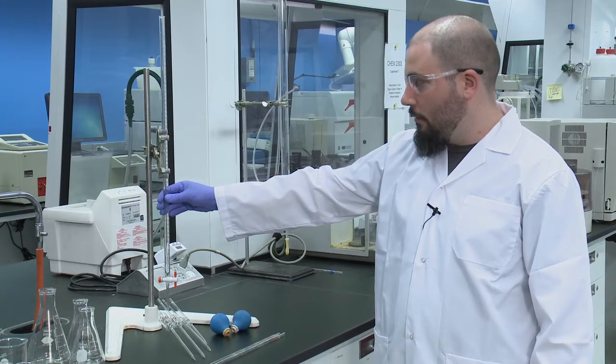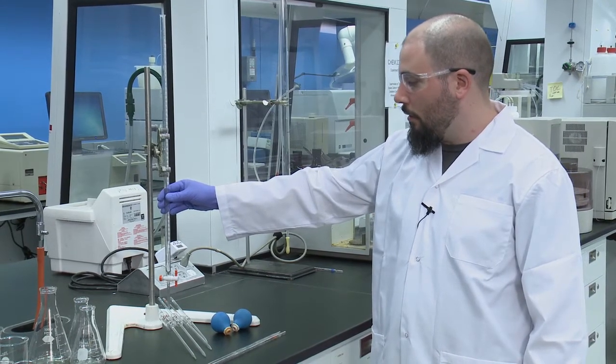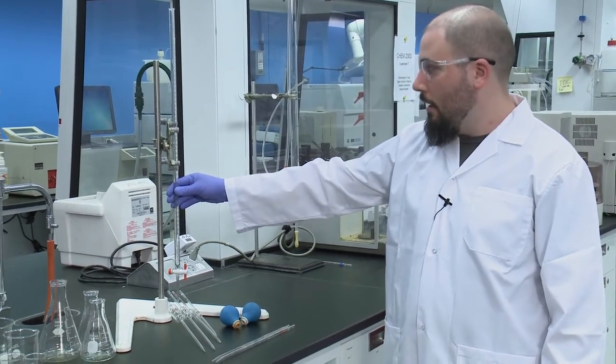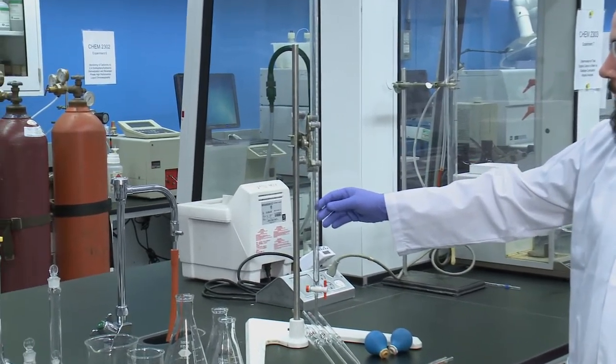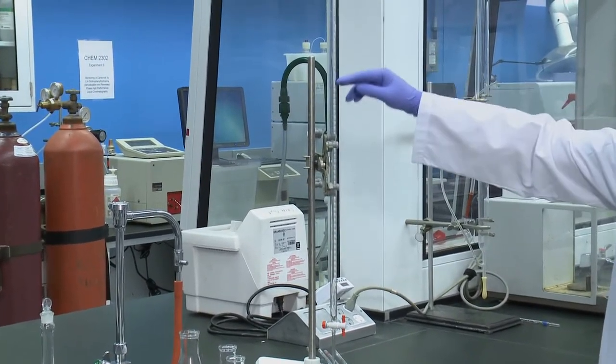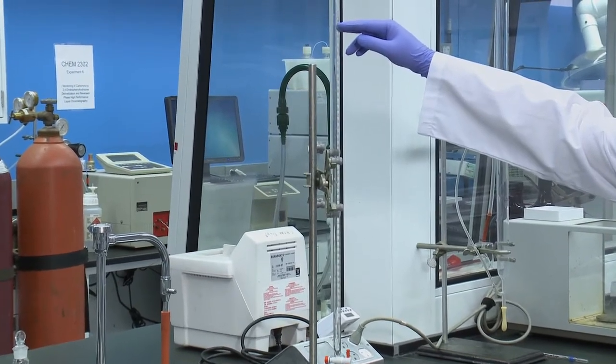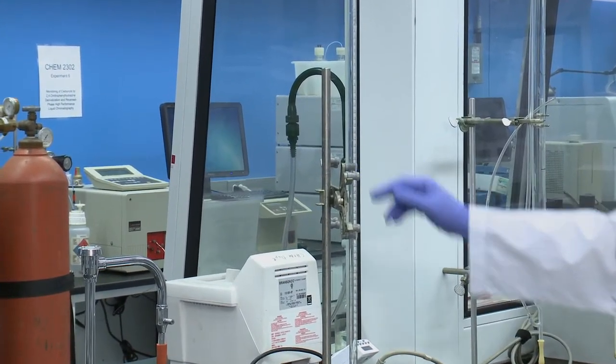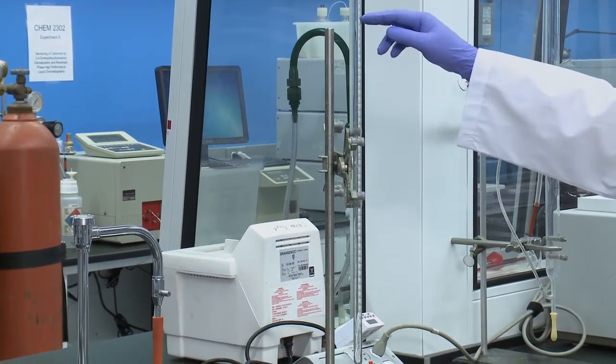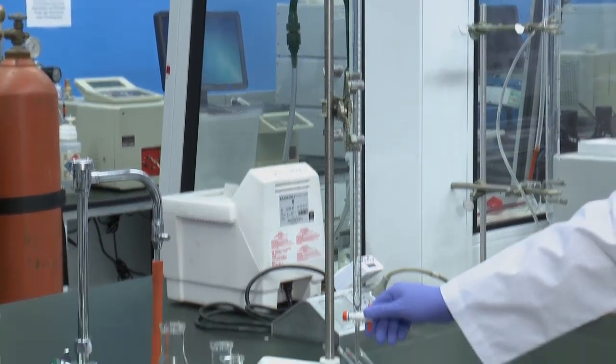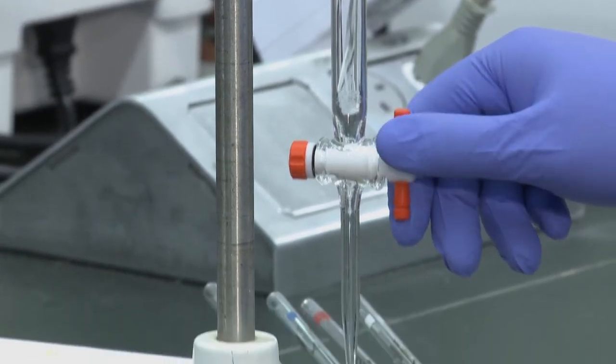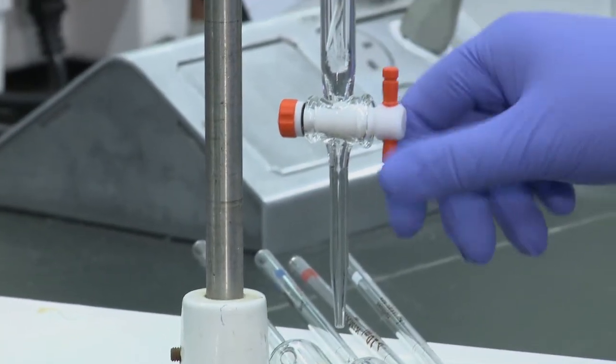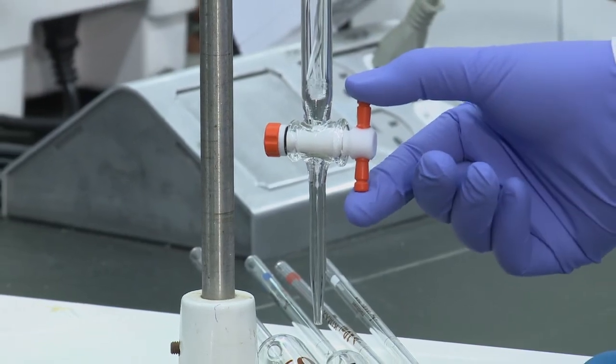On this stand we have a burette which is commonly used for titrations and is a good way of adding accurate volumes. You always begin at any of these lines and the volume you put into your flask is the difference between where you begin and where you end. Each burette comes with a Teflon cock stop located at the bottom which is used to control flow rate by how far you turn this piece here.